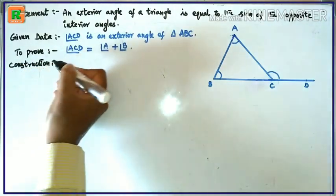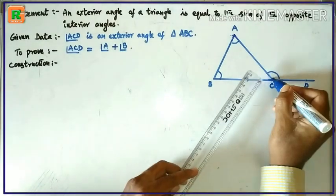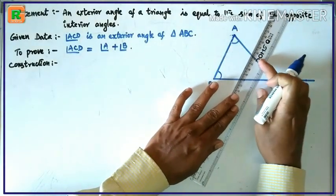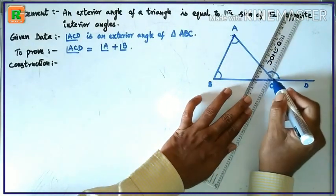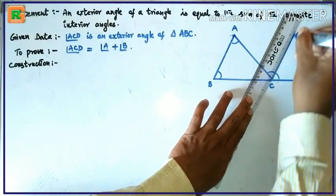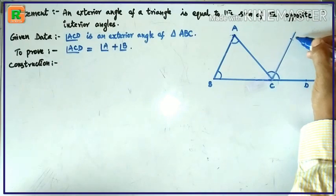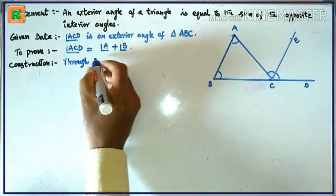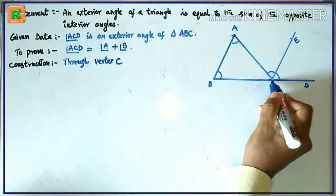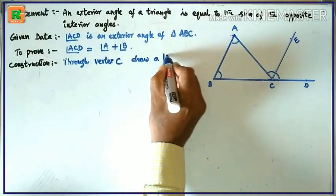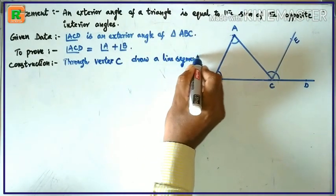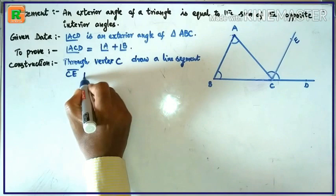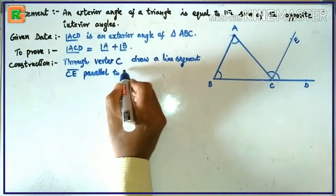Construction: Through vertex C, draw a line segment CE parallel to AB.